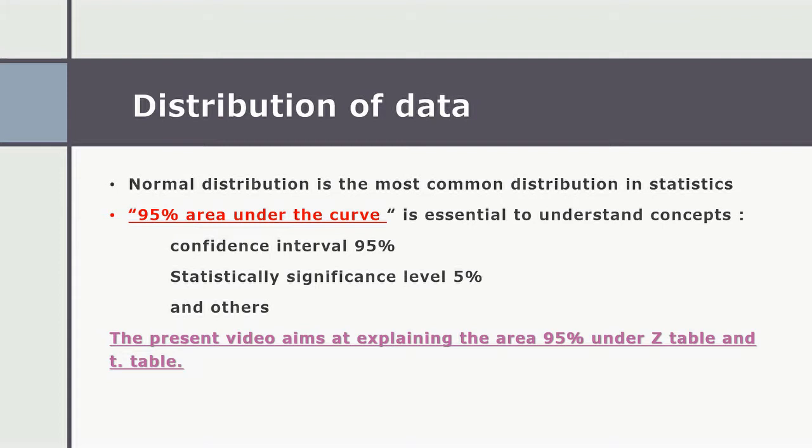Normal distribution is the most common distribution in statistics. The 95% area under the curve is essential to understand important concepts like confidence interval 95%, statistically significant levels 5%, and others. The present video aims at explaining the area 95% under Z table and T table.